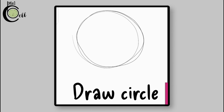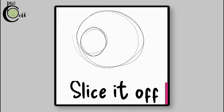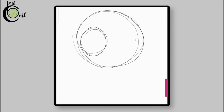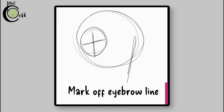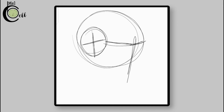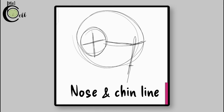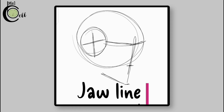Draw a circle for the head. Slice it off and draw a center line. Mark off the eyebrow line. Mark off the nose and chin line — notice the distance. Draw the jaw line.